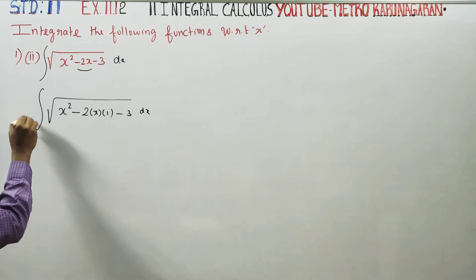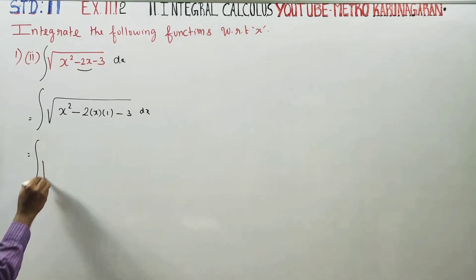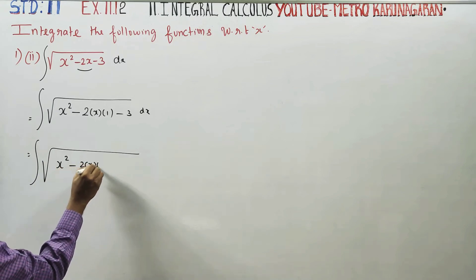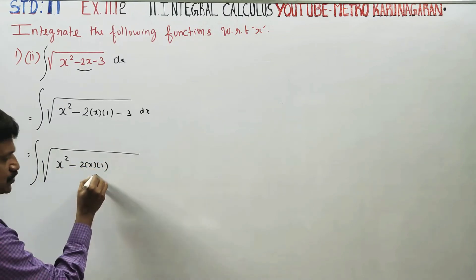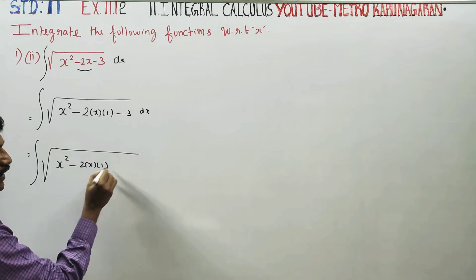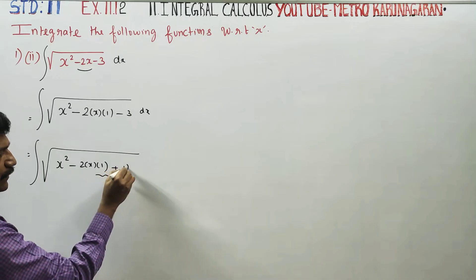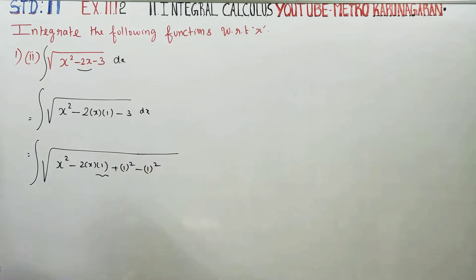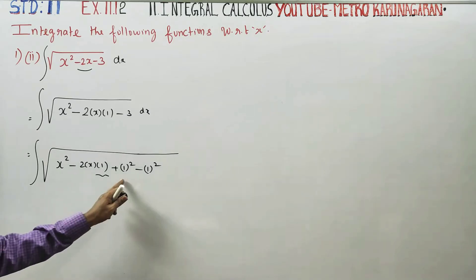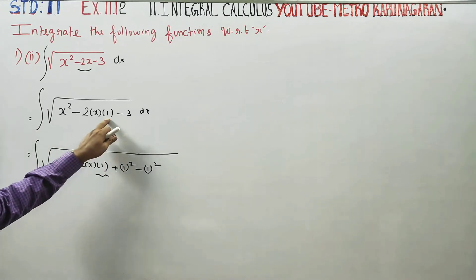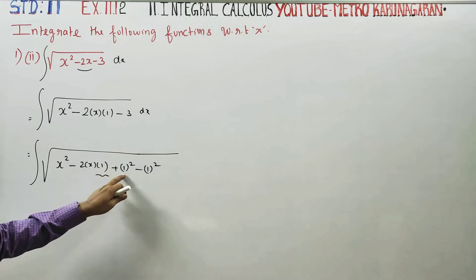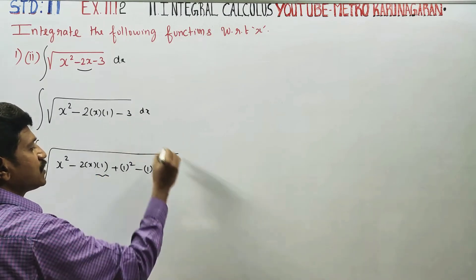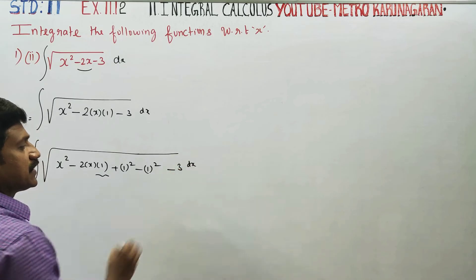Step number 1. Next stage: integration of x squared minus 2 times x times 1. We will add and subtract to complete the square.